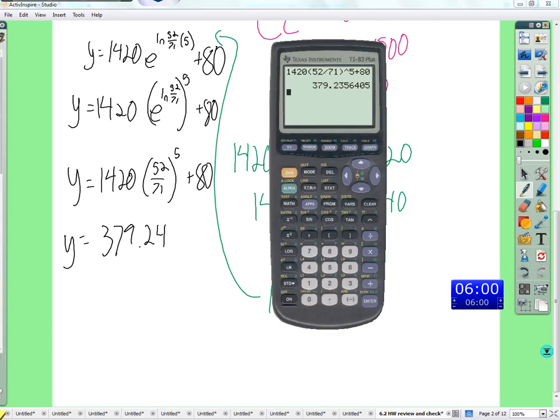I'm going to use 1420 times 52 over 71 to the fifth plus 80. That would be 379.24. I got the same thing as you. So after five hours, there you go. That's how the clock is.